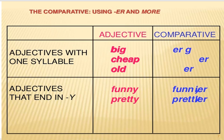We add -er here. Burada biz -er əlavə edirik: big → bigger, cheap → cheaper, old → older. Demək, tək hecalı sifətlər bir sait, bir samitlə bitirsə, o zaman sonuncu samit qoşalaşır — müqayisə dərəcəsində və üstünlük dərəcəsində də həmçinin.